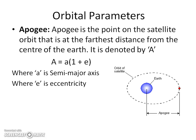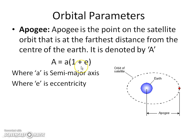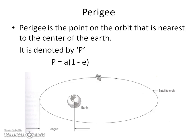Apogee is a point on the satellite orbit that is at the furthest distance from the center of the earth. The distance which is furthest from the center of the earth to its orbit is called apogee. It is represented by capital A: A = a(1 + e), where a is the semi-major axis and e is the eccentricity of the elliptical orbit.